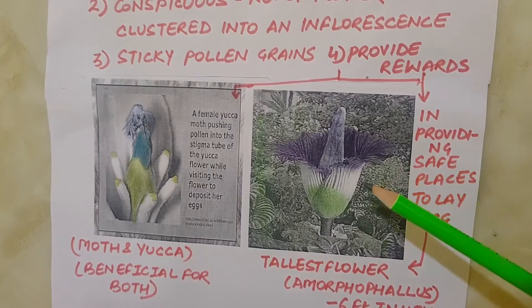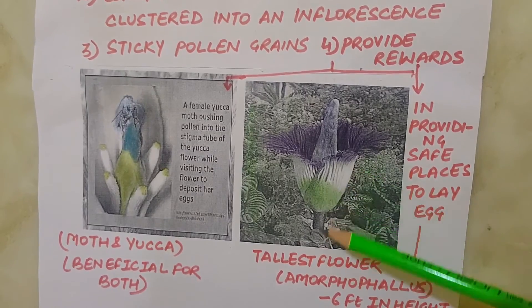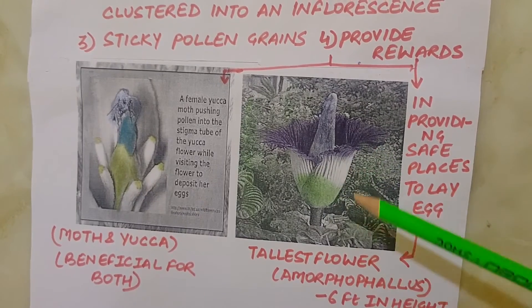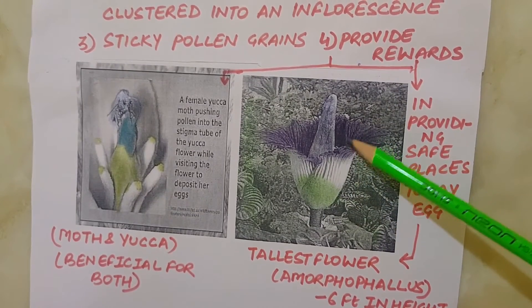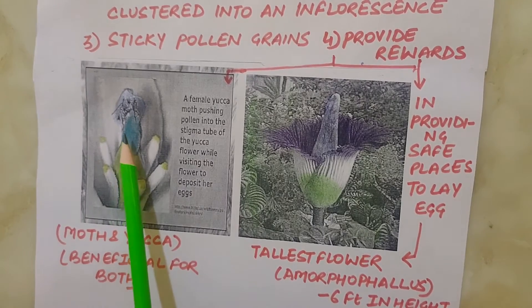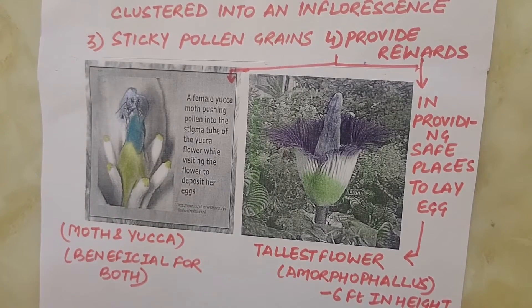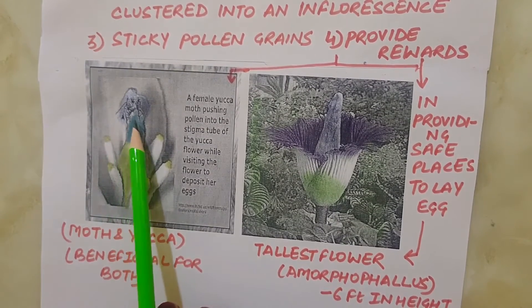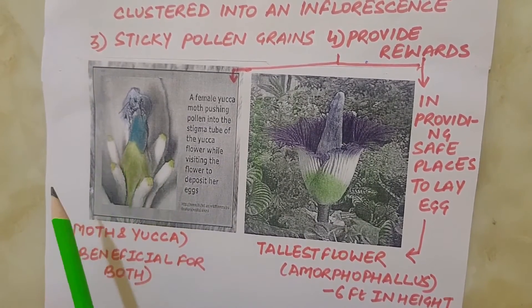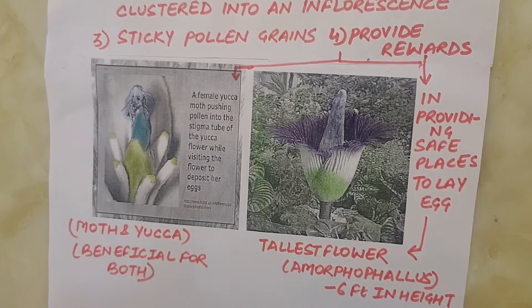In some animals, floral rewards are in providing safe places to lay eggs. An example is the tallest flower of Amorphophallus, which is about 6 feet in height — the reward here is that the insect gets to lay its eggs. A similar relationship exists between a species of moth and the plant Yucca, where both species cannot complete their life cycles without each other. The moth deposits its eggs in the locule of the ovary, and the flower in turn gets pollinated by the moth. The larvae of the moth come out of the eggs as the seed starts developing.